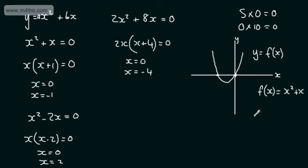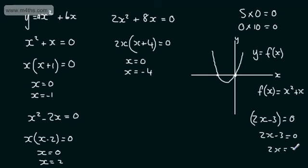If you had 2x - 3 as a bracket equal to zero and were unsure, just solve it directly: 2x = 3, so x = 3/2. These are examples of straightforward quadratic equations that need a single bracket to factor.